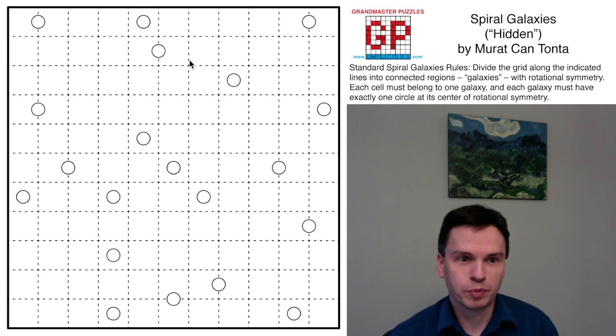We're here to talk through the Spiral Galaxies puzzle by Murat Can Tonta with a hidden theme. There's a little bit of symmetry here in the center, but when we write down hidden theme, we sometimes question should we just leave it themeless or not.